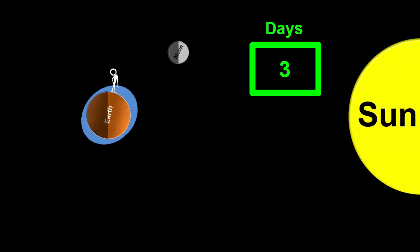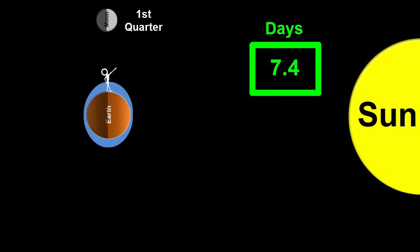You can see that each day corresponds to one Earth rotation. In just over seven days, that is seven Earth rotations, the moon orbits around the Earth to its first quarter position where we can see half its day and half its night side.